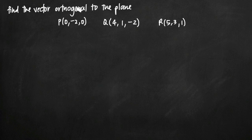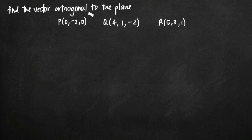Now, orthogonal — if you haven't heard the word before — you can essentially think of as meaning perpendicular, which means 90 degrees. The only reason we use orthogonal is because when dealing with vectors, perpendicular isn't technically correct. So the vector orthogonal to the plane is the same thing as the normal line to a plane in three-dimensional coordinate space.